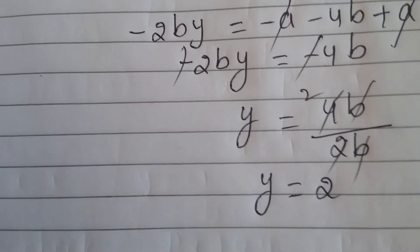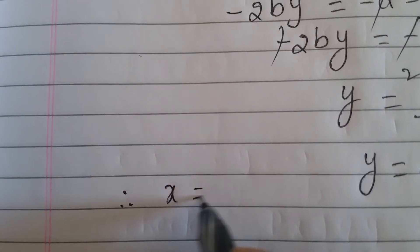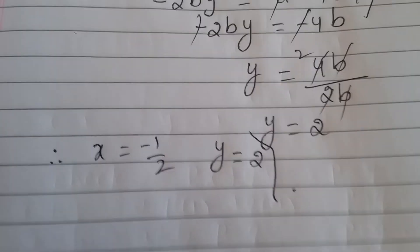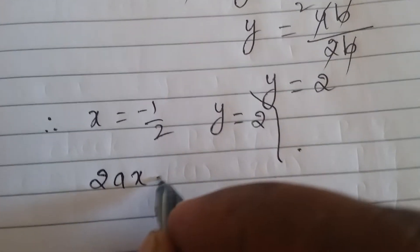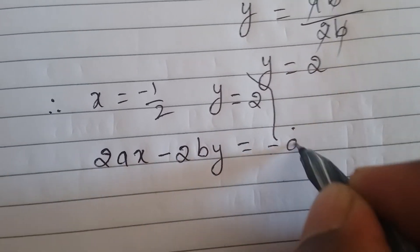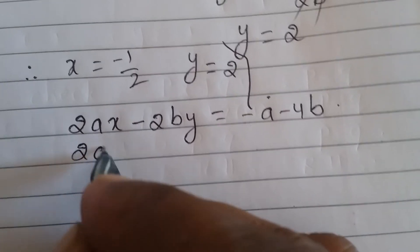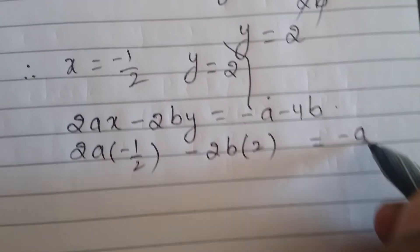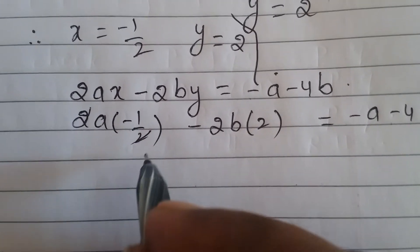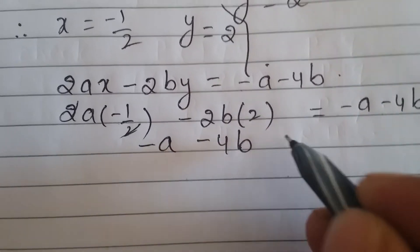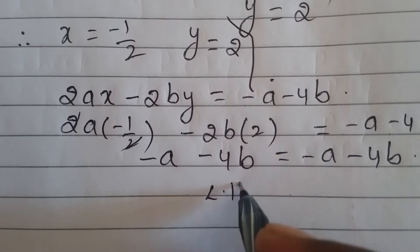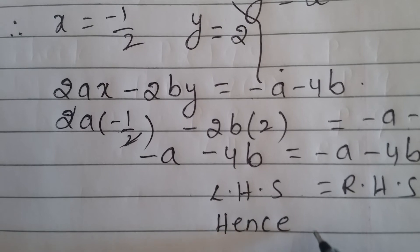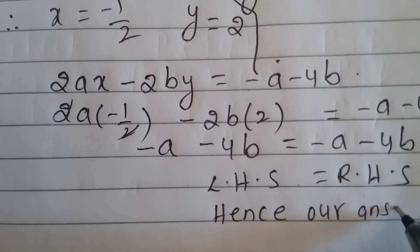The value of x is minus 1 by 2 and the value of y is 2. This is the final answer. For verification, take equation number three: 2ax minus 2by equals minus a minus 4b. Substituting x equals minus 1 by 2 and y equals 2, the 2 and 2b cancel — giving minus a minus 4b equals minus a minus 4b. LHS equals RHS, so our answer is correct.